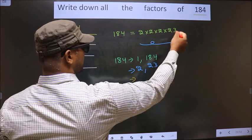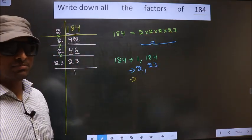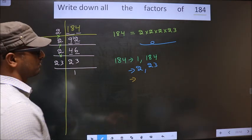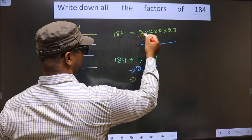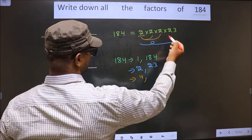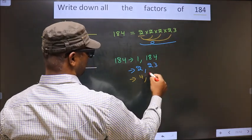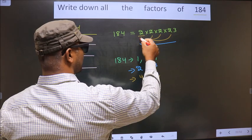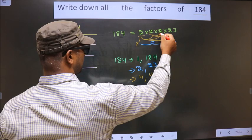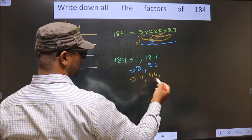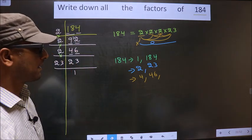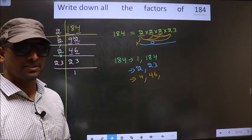Now from these numbers, we select combinations of 2 numbers. I fix one 2 and combine it with another 2 to get 4. I combine 2 with 23 to get 46. Combining another pair of twos also gives the same results, so no more unique combinations of 2 numbers are possible.